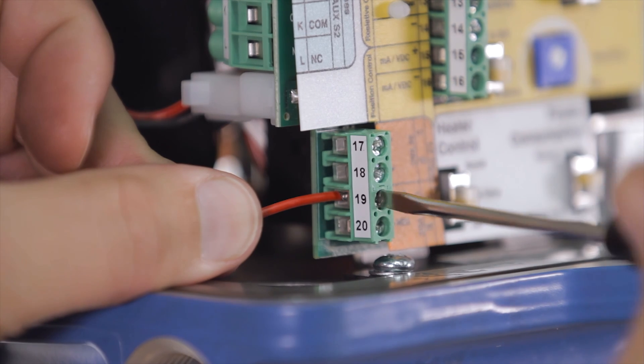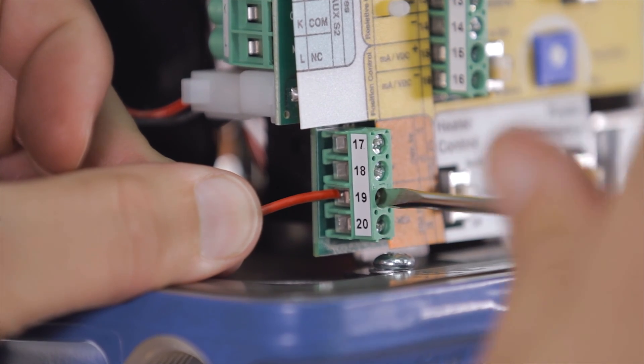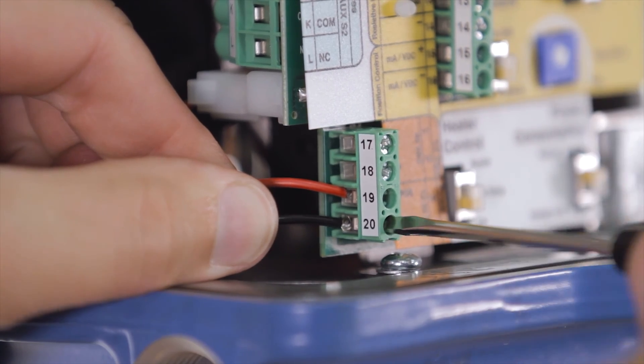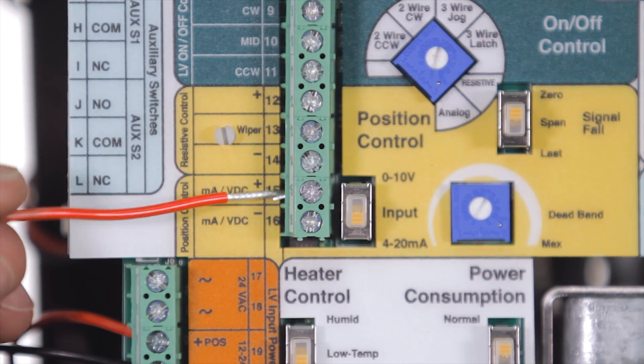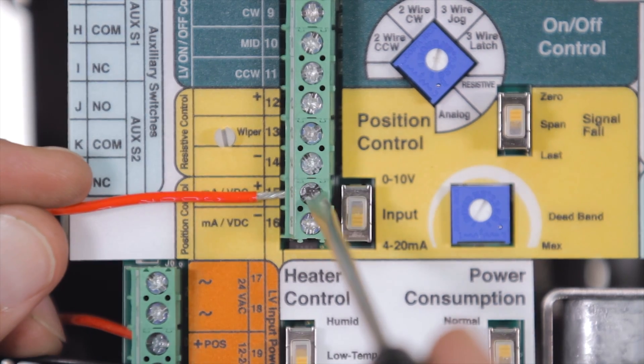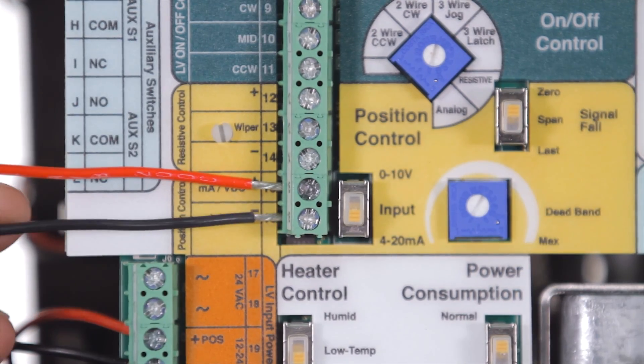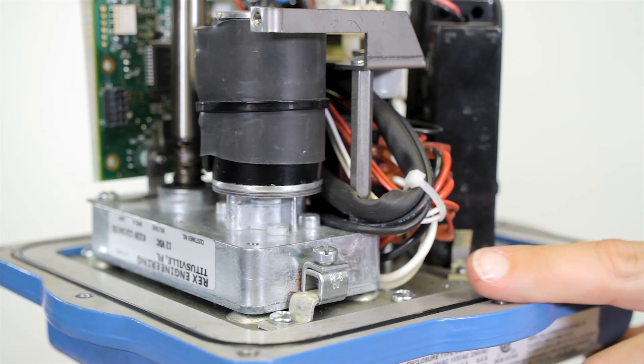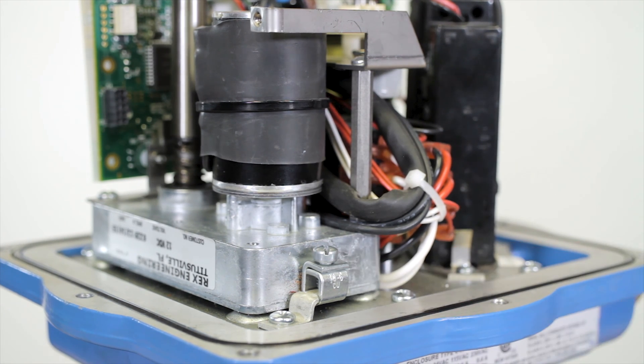Terminate 24 volt power to terminals 19 and 20. Connect the 4 to 20 milliamp loop calibrator to terminals 15 and 16. If you're using 115 or 230 volt input power you'll need to terminate the ground wire onto the grounding lug.